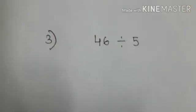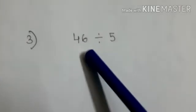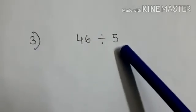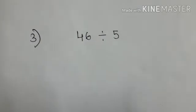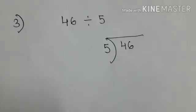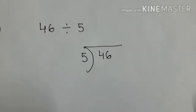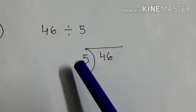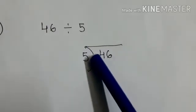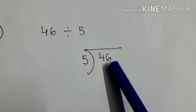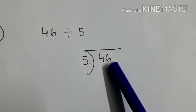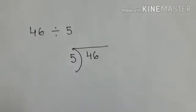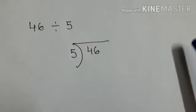Question number 3 is 46 divided by 5. We have to solve this. Say children. 46 divided by 5. We have placed the dividend and the divisor. Now we have to recall the table of 5 where we get 46. Or the nearest number less than 46. So 5 table.